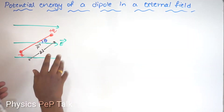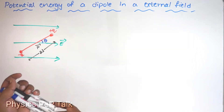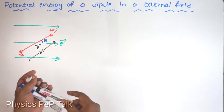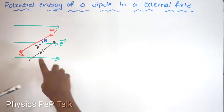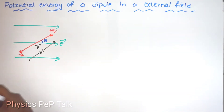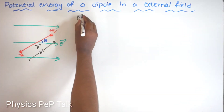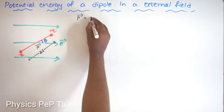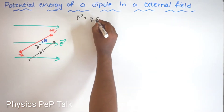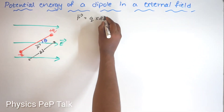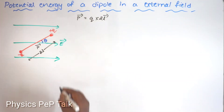In a dipole, there is something called the dipole moment, which is given by the letter P. The dipole moment is nothing but the product of the charge and the length of the dipole.